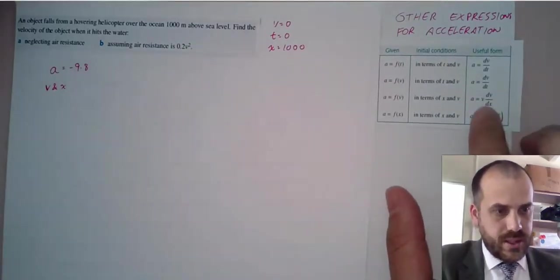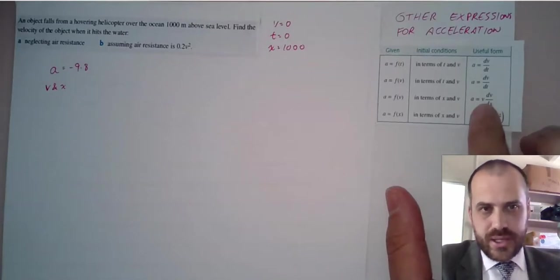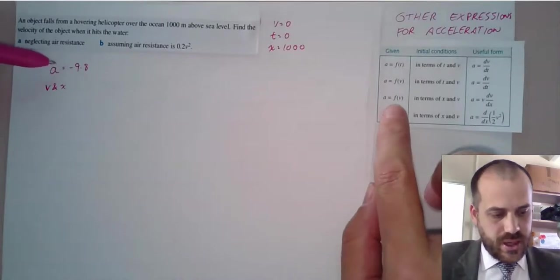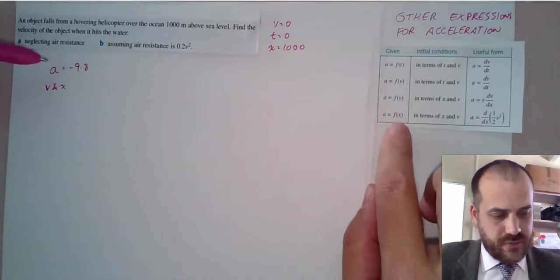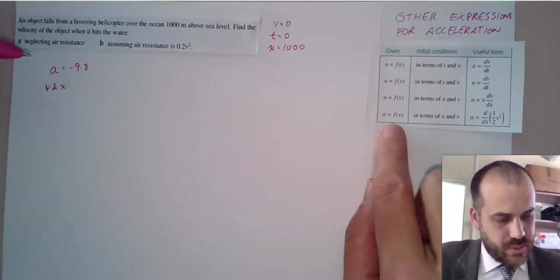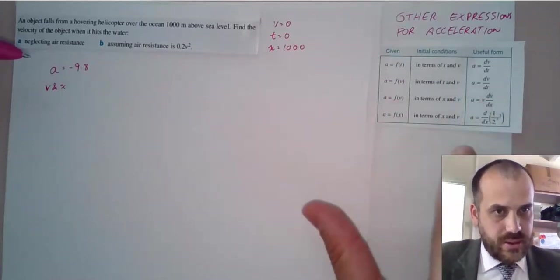We might be looking at this one here and saying, well, that's a relationship between V and X as well. But our acceleration function is not a function of velocity. It's a function of displacement. So we need to use this one here, not that one there.